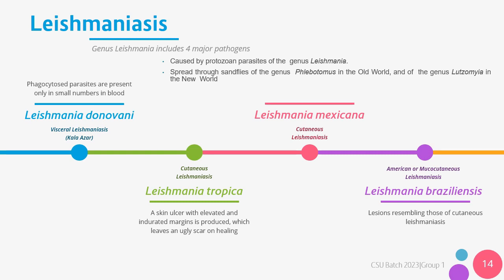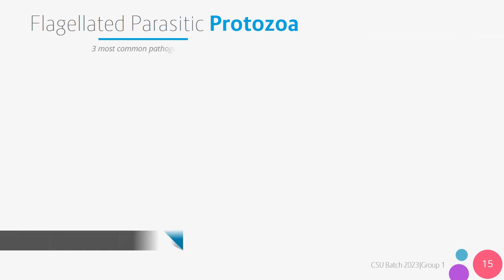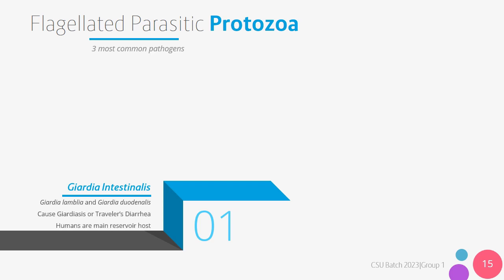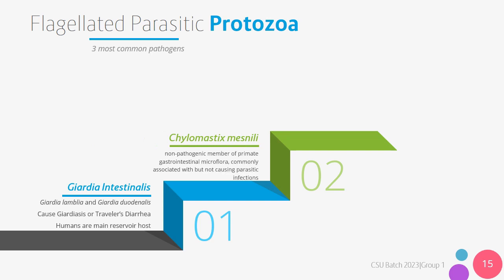Now that we've moved on from kinetoplasta, we will discuss the flagellated parasitic protozoa. There are three common species of interest which fall under this, and they include Giardia intestinalis, also known as Giardia lamblia and Giardia duodenalis, which causes Giardiasis or traveler's diarrhea, Chilomastix mesnili, and trichomonads. Chilomastix mesnili is not pathogenic, but is associated — though not the cause — of parasitic infections.